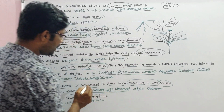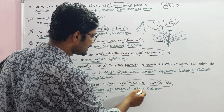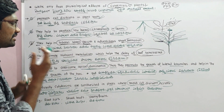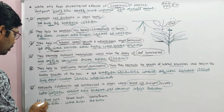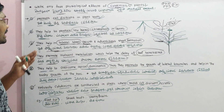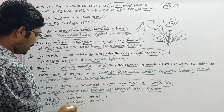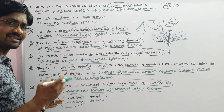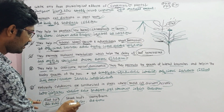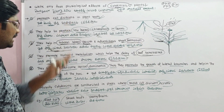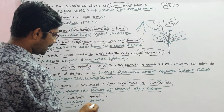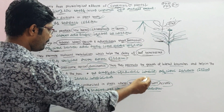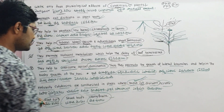The sites of natural cytokinin synthesis include: root tips, where rapid cell division occurs; shoot buds; terminal buds; axillary buds; and young fruits — all regions with active and rapid cell division.